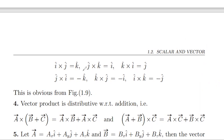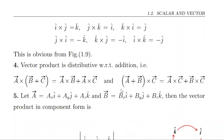In the next section we will also discuss the multiplication of three vectors. For the distributive property: a cross (b + c) equals a cross b plus a cross c; similarly (a + b) cross c follows the same rule.